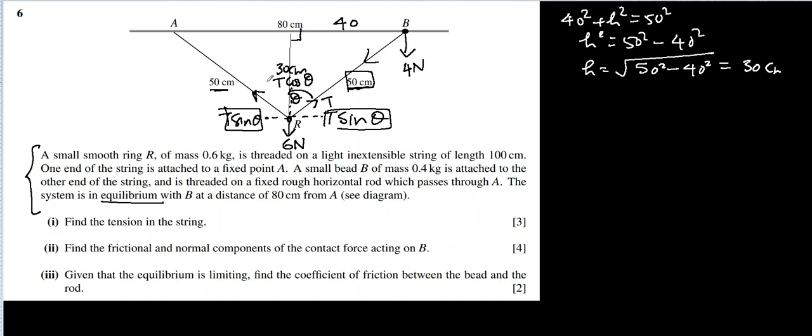But it will become 2T cos theta towards up, because the component of this tension will also be upwards. So it will become 2T cos theta, and since this is in equilibrium, this 2T cos theta must equal 6 Newton.